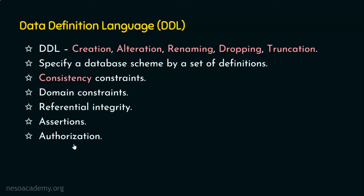Coming to the last point: the data dictionary and metadata. Whatever DDL commands we execute, they generate an output, and the output of all DDL commands is placed in a special table called the data dictionary. This data dictionary is a special type of table that contains metadata — data about data. It can be accessed and updated only by the database system, not by regular users. Whenever any operation is carried out on the database, the database system always consults the data dictionary before reading or updating any data.